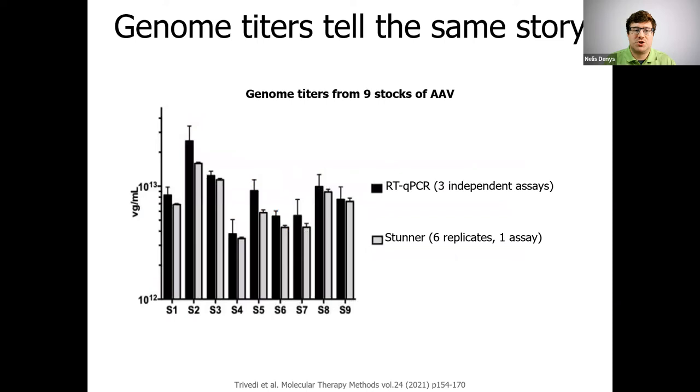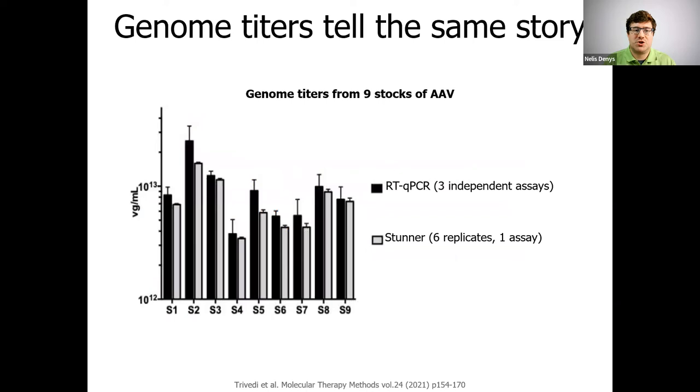Now, for genome titers, nine batches of AAV lots were read by both qPCR and Stunner for the genomic titer. Stunner and qPCR correlate very well, but Stunner reads are reagent-free, standard-free, and only take seconds. Further in the article, this genome titer will be used as the first half of the AAV's percent full.